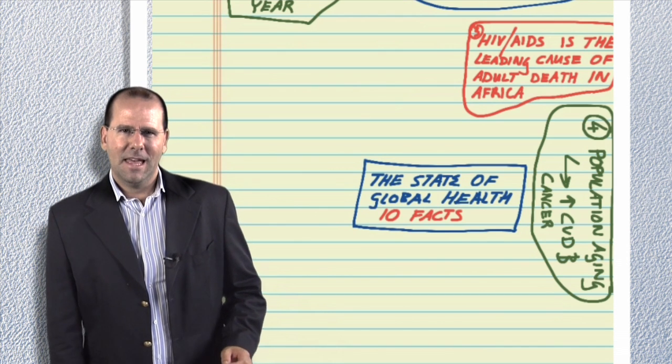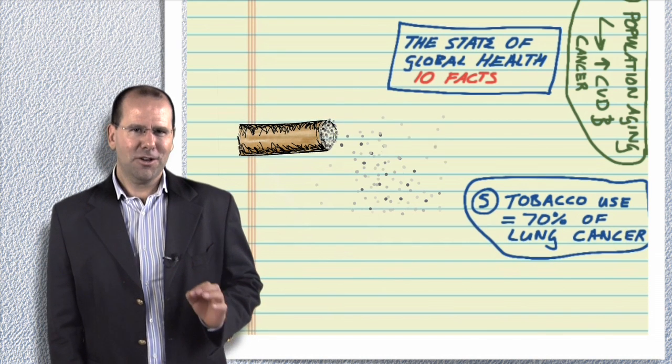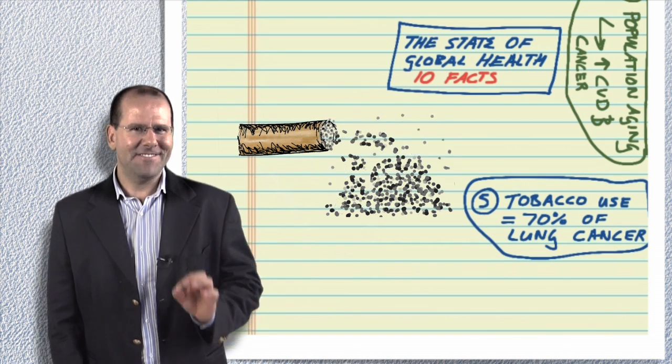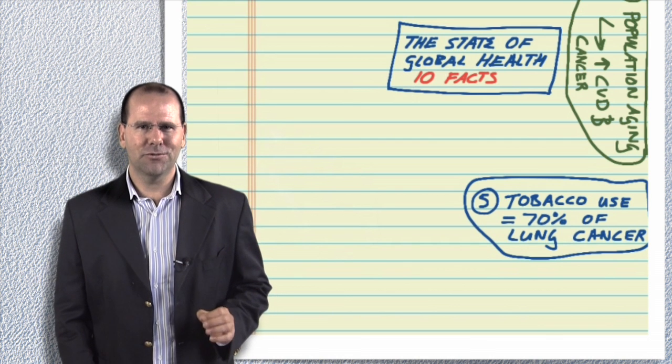Fact number five: lung cancer is the most common cause of death from cancer. Tobacco use is responsible for about 70 percent of all lung cancer. It is the single largest preventable cause of cancer in the world today.